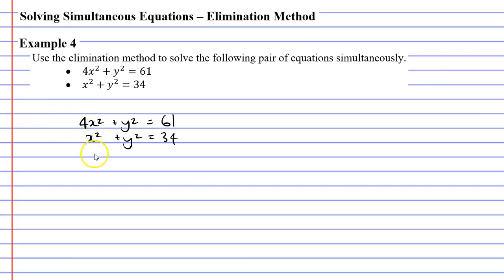Making sure we line up those x's, y's, the equal signs, and the constant terms here. Now I'm going to subtract these equations, and the reason I'm doing that is because y² minus y² gives me 0, which means I can cancel them out here.